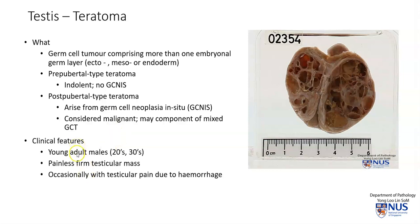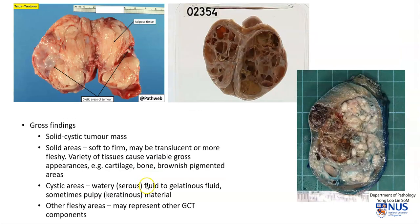Clinically, teratomas usually affect young adult males, and they present as a painless firm testicular mass, occasionally with pain due to hemorrhage into the tumor.